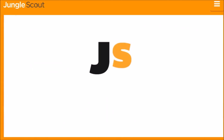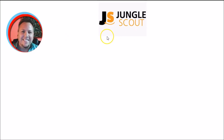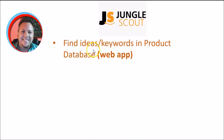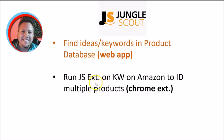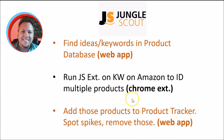Within a few days you'll have actual data collected on the product so you have a greater understanding of its performance in real time. Here's Jungle Scout's recommended process: first, find your ideas and keywords in the Product Database within the web app. Then run the Jungle Scout extension in your Chrome browser on those keywords while you're on the Amazon site, to identify multiple products. Once you do that, add those products to the Product Tracker in the web app — this helps you spot spikes and remove temporary trends.